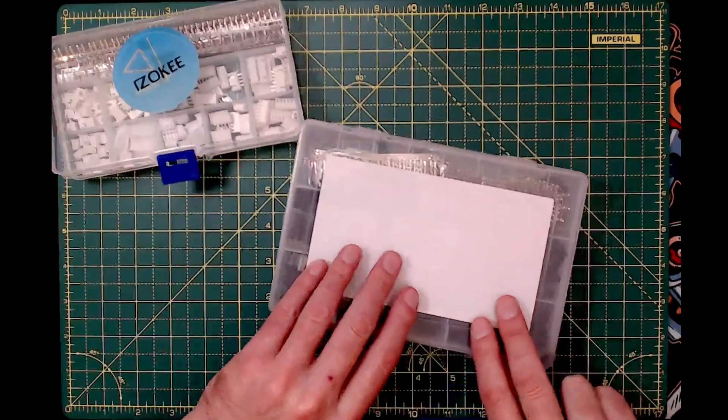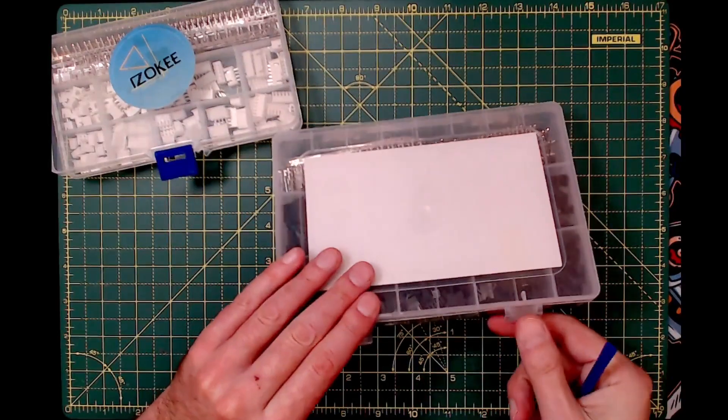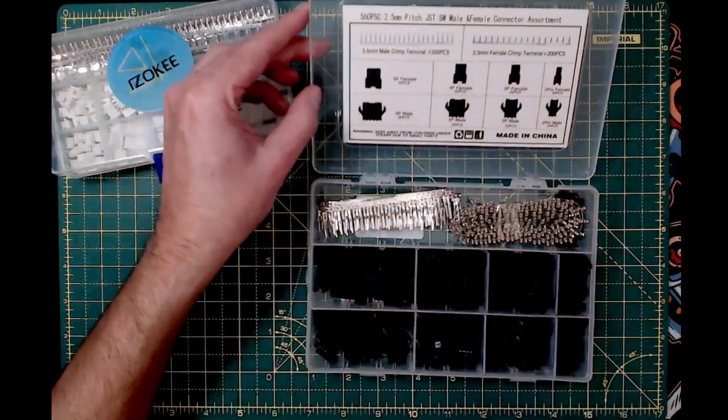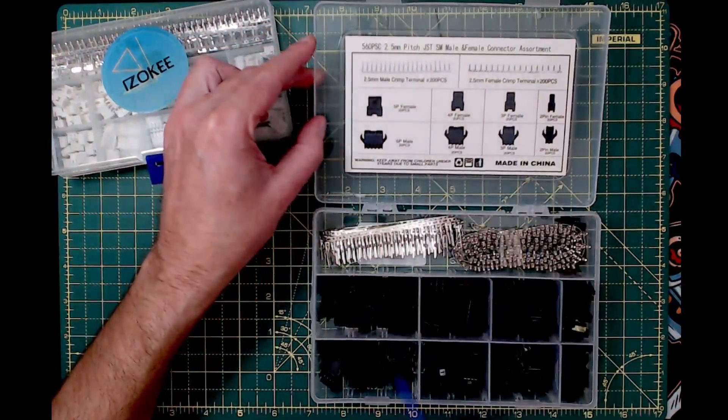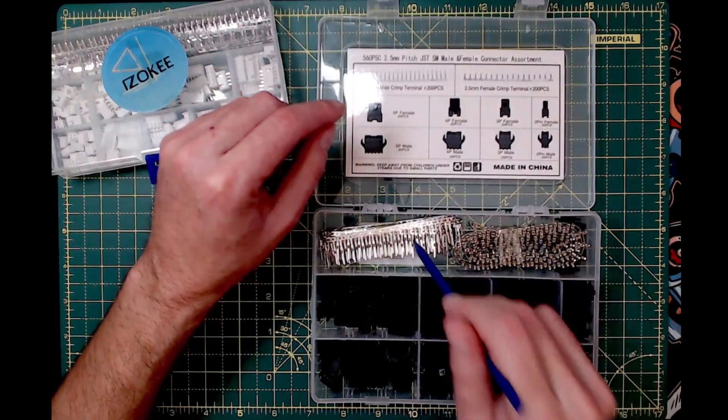There's that kit from Iizoki—I'll include links below. And there's another kit, these are JSTs as well, kind of inline connectors. You get the crimps there.